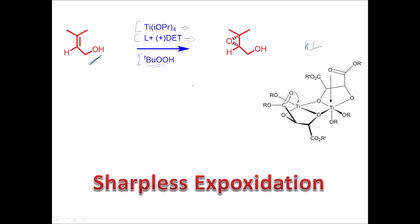To understand how we get enhanced selectivity or enantiomeric excess, you need to know what the Re-face and Si-face are and how to find them for alkenes. The Si-face corresponds to minus diethyl tartrate (−DET), which attacks from the Si-face, and plus DET (+DET) attacks from the Re-face.